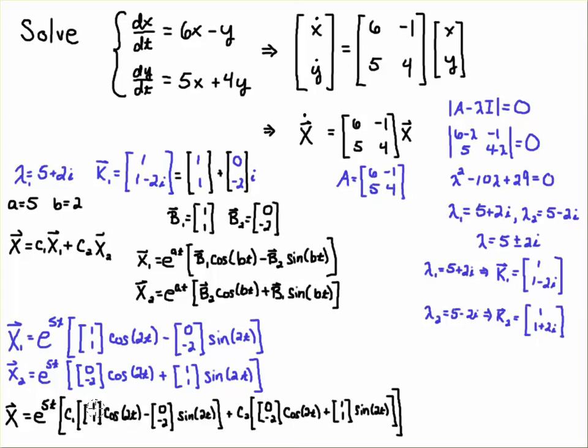distribute into this vector. So notice you're going to get c1 cosine 2t minus, and that's a zero so that guy's gone, plus c2 times—now there's a zero here so that guy's gone—so you're just going to get a c2 sine 2t. So the top one is going to be e to the 5t times the quantity c1 cosine 2t plus c2 sine 2t. That's going to be x, little x.